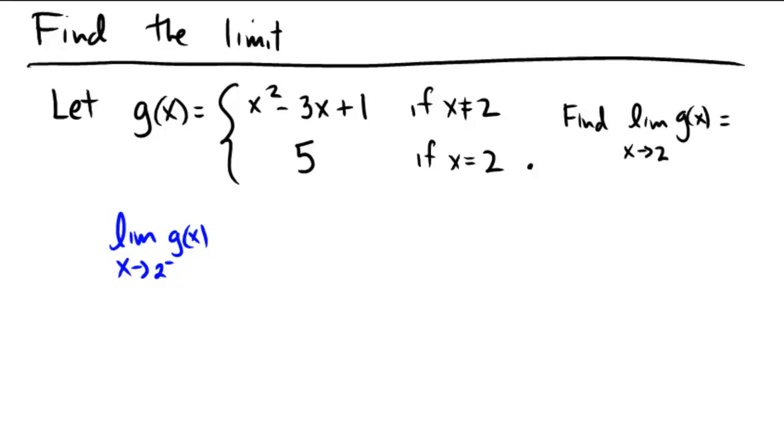If we approach 2 from the left, that means that we're not quite at 2. We are not equal to 2, and we're going to be at a number like 1.999. As we go in here into this function, we have x squared minus 3x plus 1 is the rule that we would be following as we got close to 2.